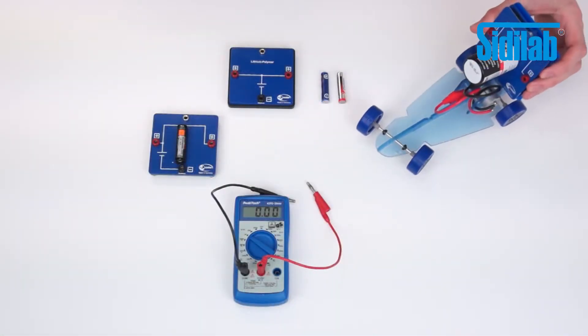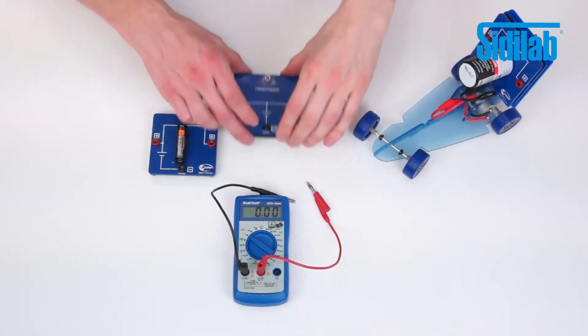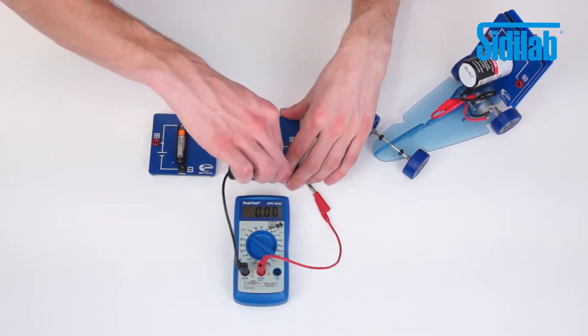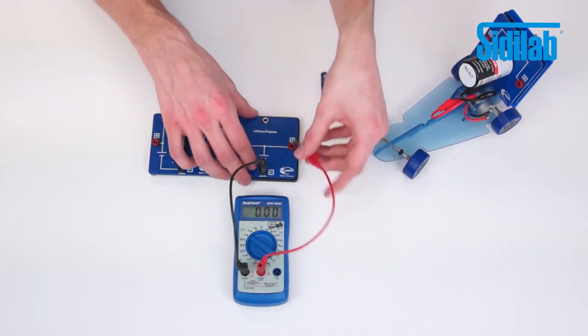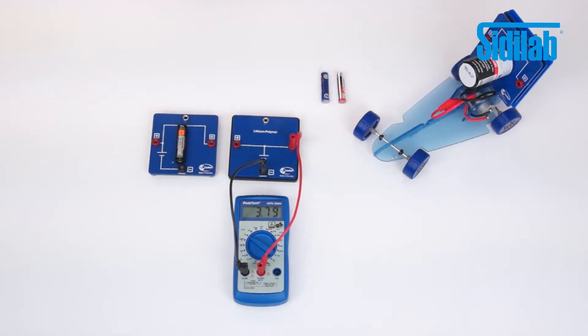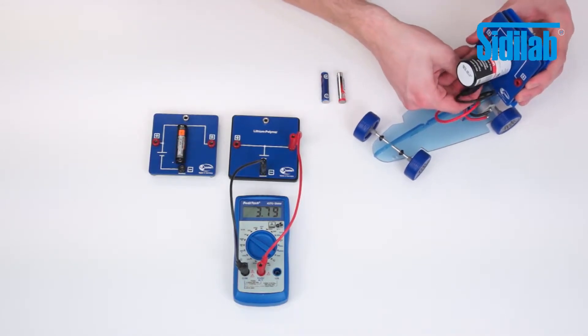After this experiment we want to use the lithium polymer battery. From this we can also determine the open circuit voltage. It amounts to 3.79 volts. It is fastened to the car in the same way as the lead battery.